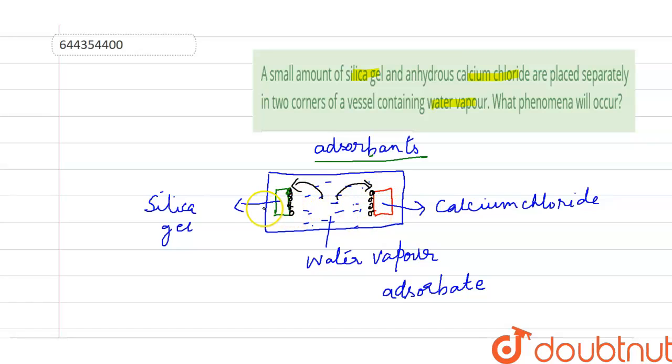The water vapor molecules accumulate on the surface of silica gel and calcium chloride, and this phenomenon is called adsorption.